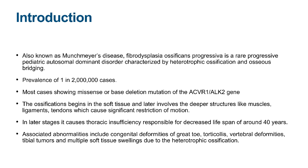The ossification begins early in the soft tissues and later involves the deeper structures like the muscles, ligaments, and tendons. This ossification causes significant restriction of motion. In the latest stages, when the progression of ossification is so severe, it causes thoracic insufficiency, which is responsible for a decreased lifespan of around 40 years in these patients.